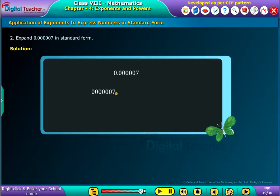we have moved decimal point 6 places towards right and multiply the resultant number by 10 power minus 6. Because 0.000007 is equal to 7 by 10 lakh, which is in turn equal to 7 by 10 power 6, which is further equal to 7 into 10 power minus 6.